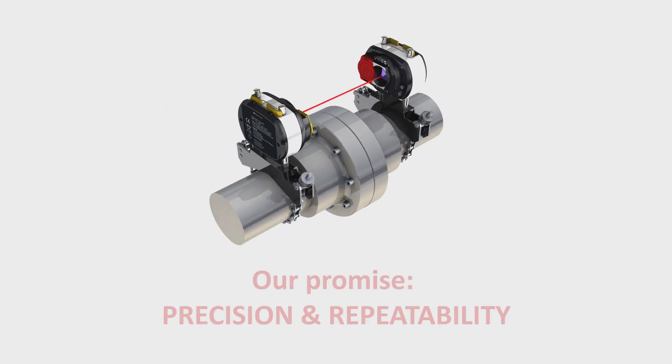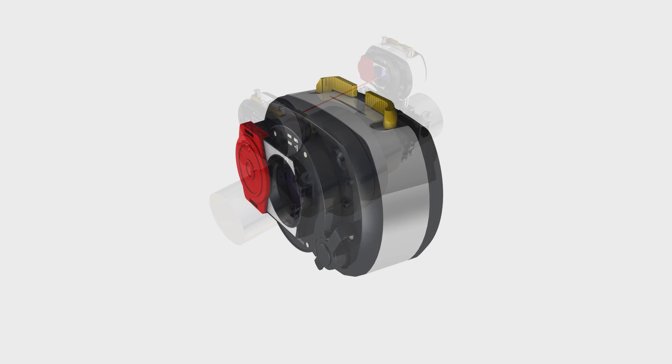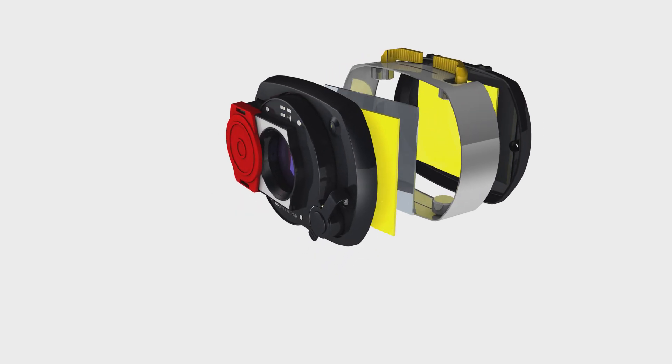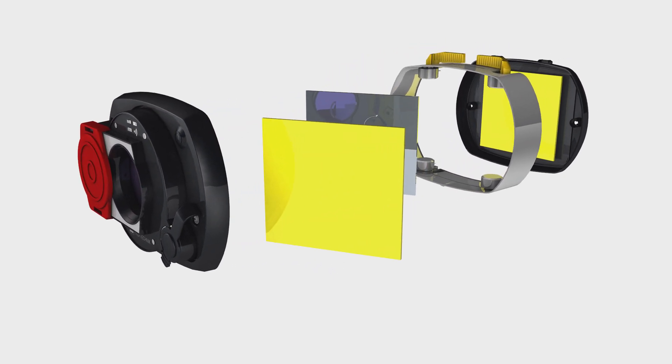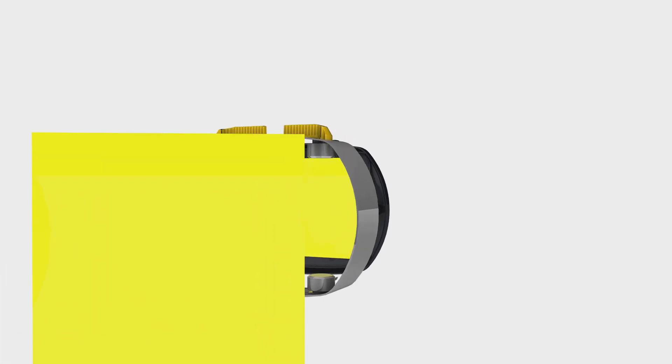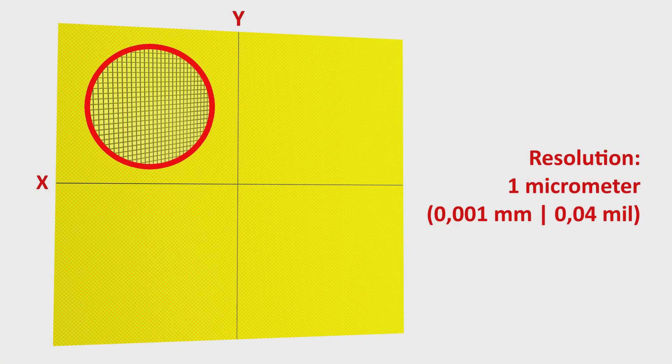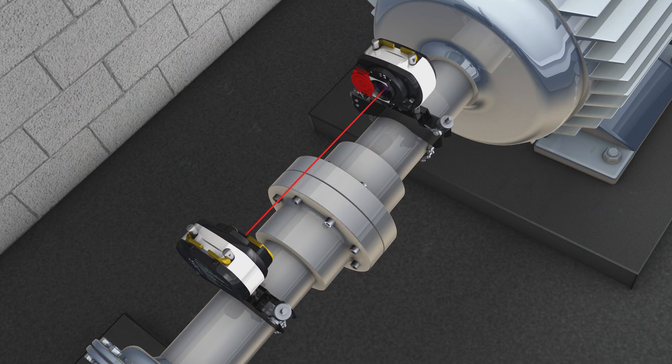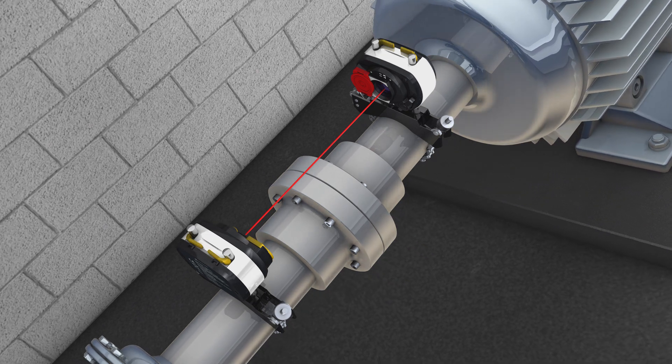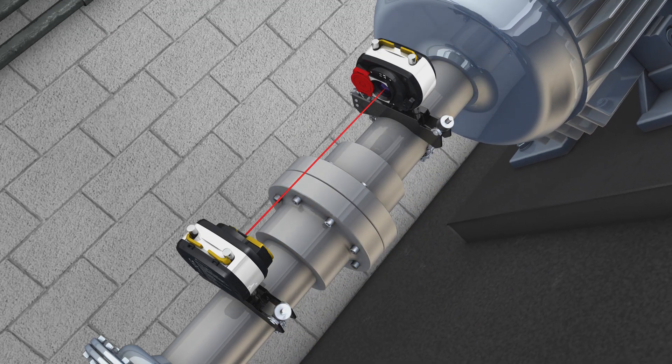Now let's see and understand how precise Pruftechnik SensALIGN detectors are. The resolution of each detector is at 0.001 millimeter, that means 1 micrometer. And since the detector areas are given in X and Y axis, Pruftechnik SensALIGN technology is able to measure shaft angularity and offset in one single shaft rotation.